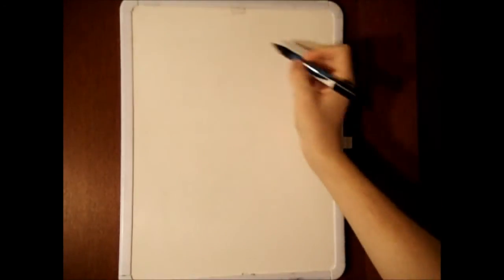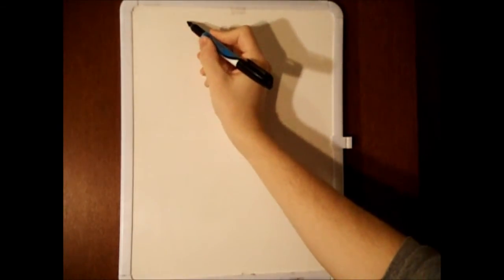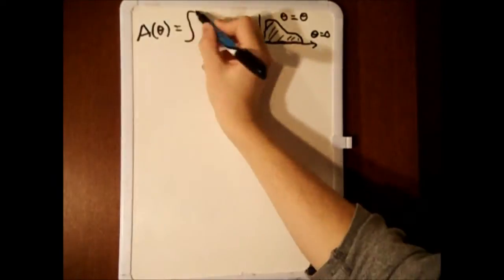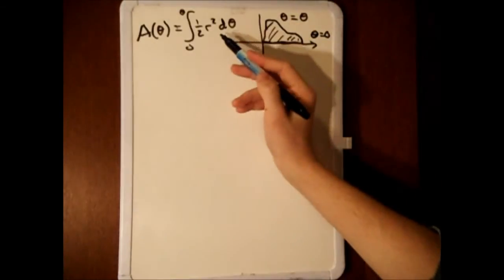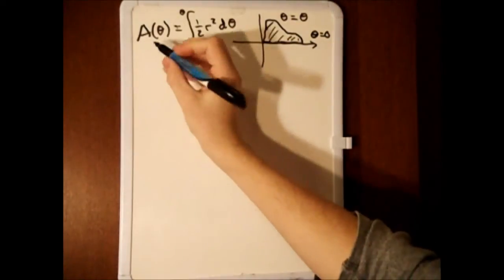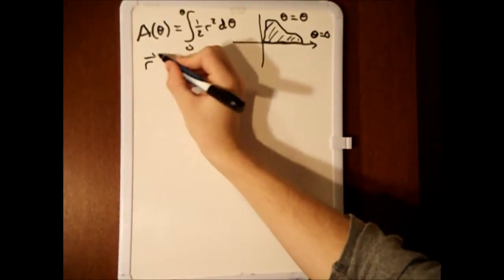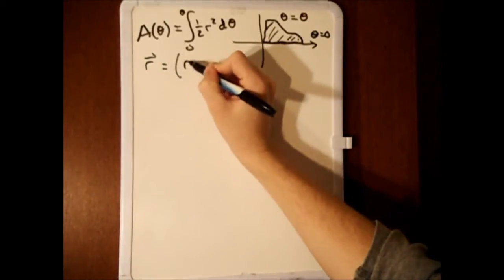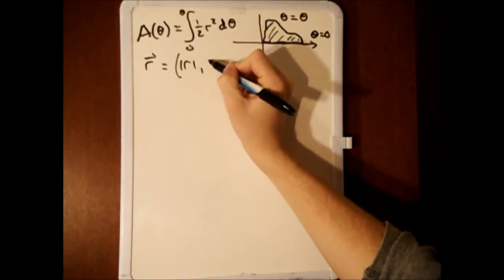But what does that have to do with the area being swept out? Well, the area swept out by any polar curve is given by this expression, which applies for any polar curve, including our convenient definition of the r vector as r theta.